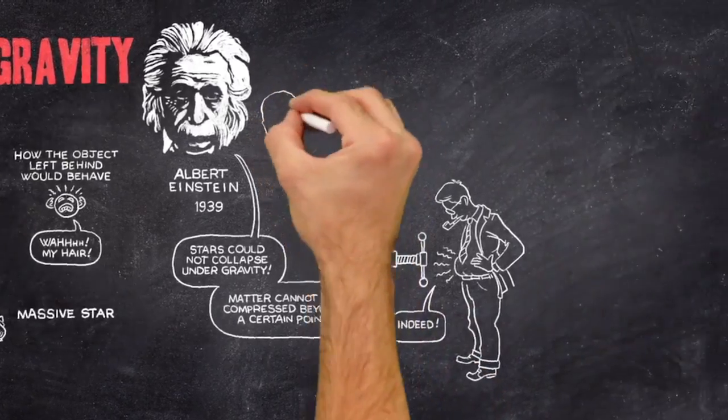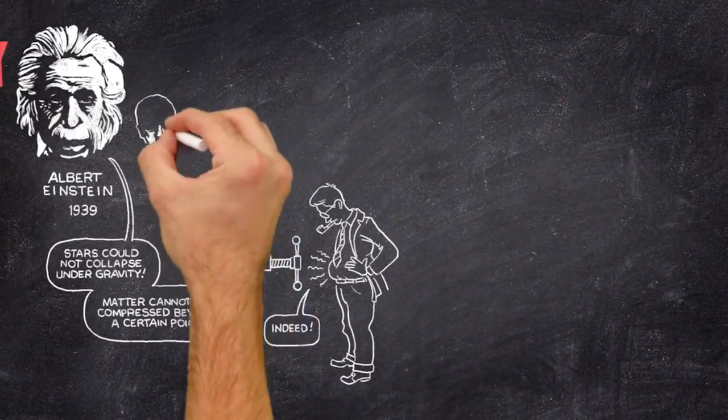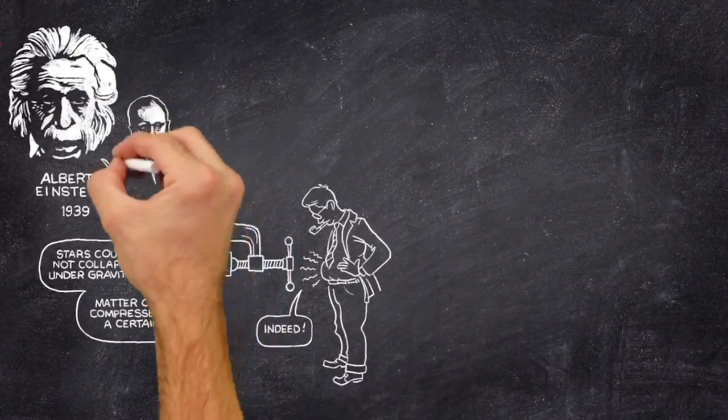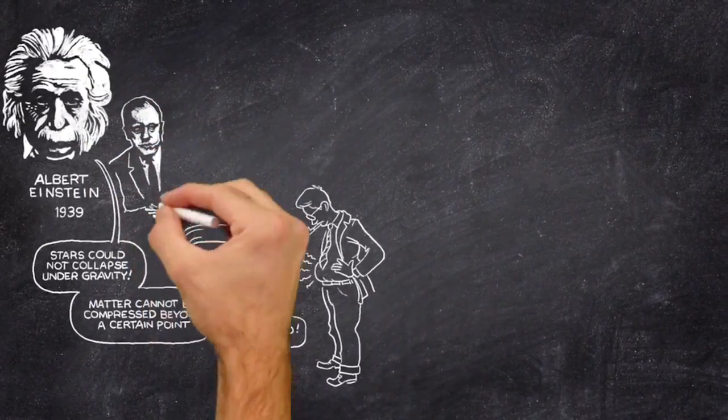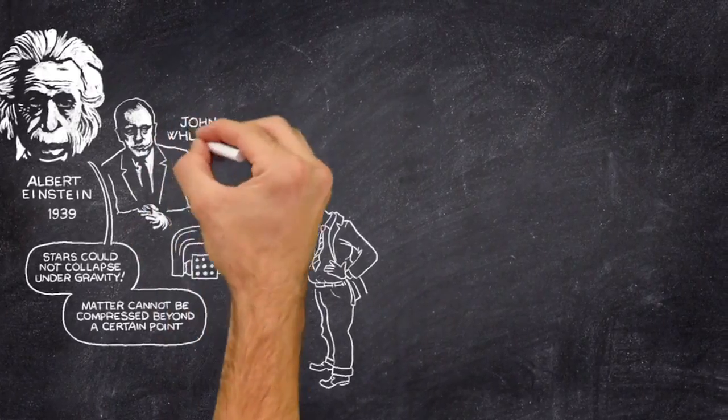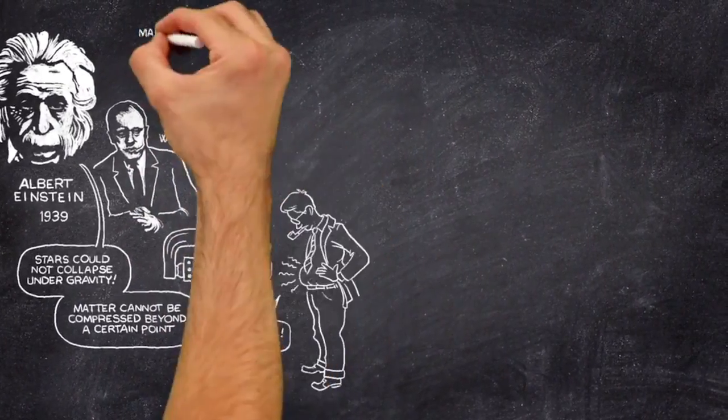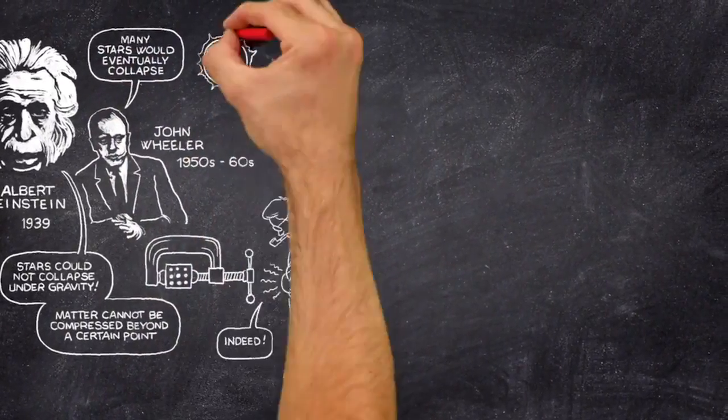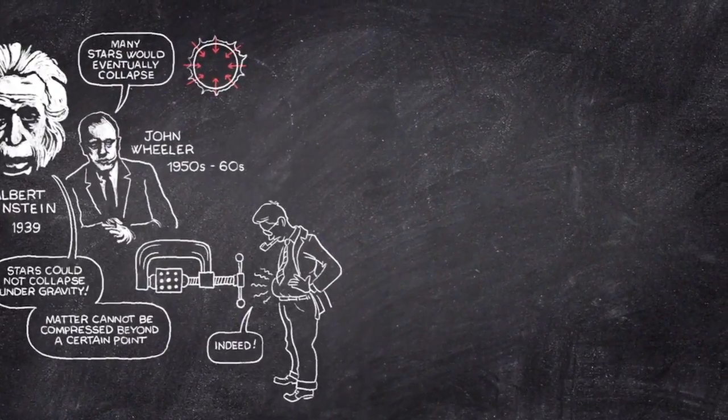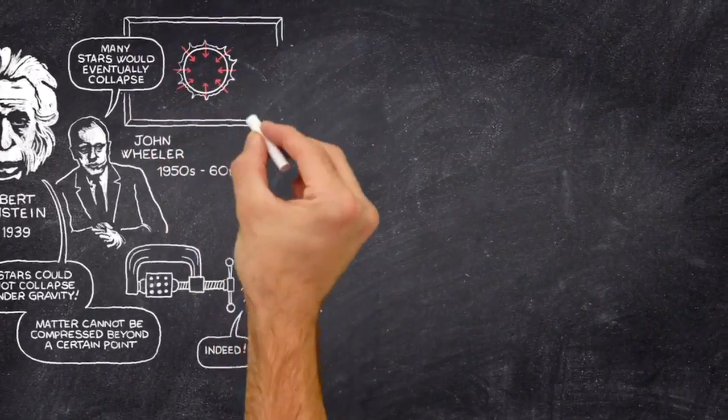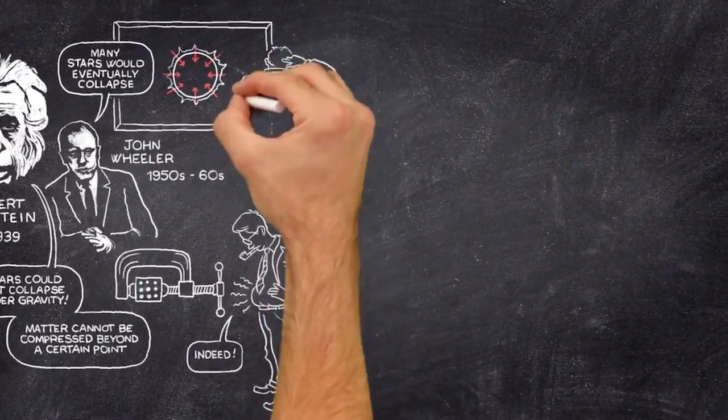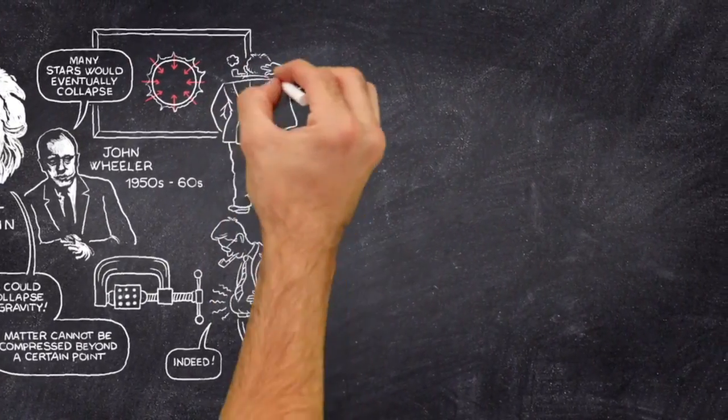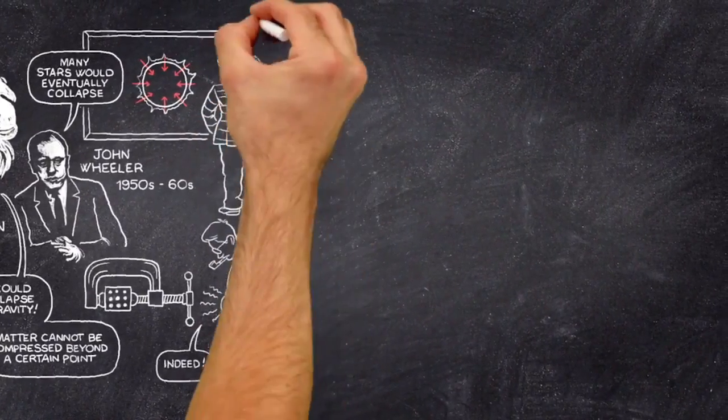The principal exception was the American scientist John Wheeler, who in many ways is the hero of the black hole story. In his work in the 1950s and 60s, he emphasized that many stars would eventually collapse, and the problems that posed for theoretical physics. He also foresaw many of the properties of the objects which collapsed stars become, that is, black holes.